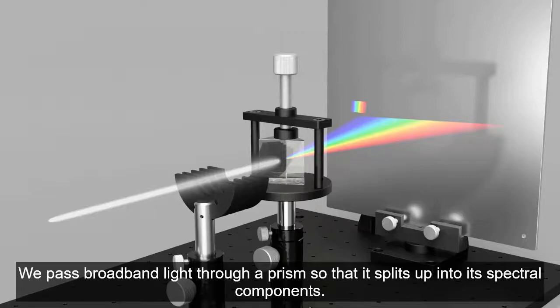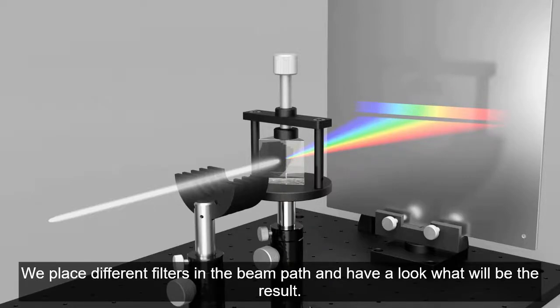We pass broadband light through a prism so that it splits up into its spectral components. We place different filters in the beam path and have a look at what will be the result.